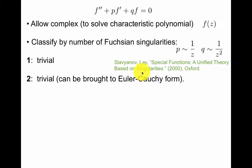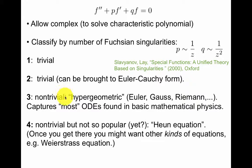So the sweet spot is three—it's called hypergeometric. It captures most ODEs found in basic mathematical physics. At least four is also non-trivial, it's not so popular, it's called the Heun equation. When this captures most of what we need for basic physics, it might be that this is not the only way we want to go in.